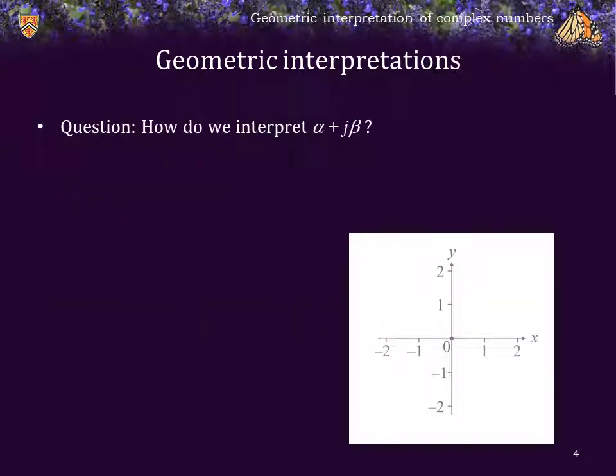Question. How are we going to interpret a complex number alpha plus j beta, where alpha is real and beta is real? So these two are real numbers, and the second is multiplied by the imaginary unit j equal to the square root of negative 1.